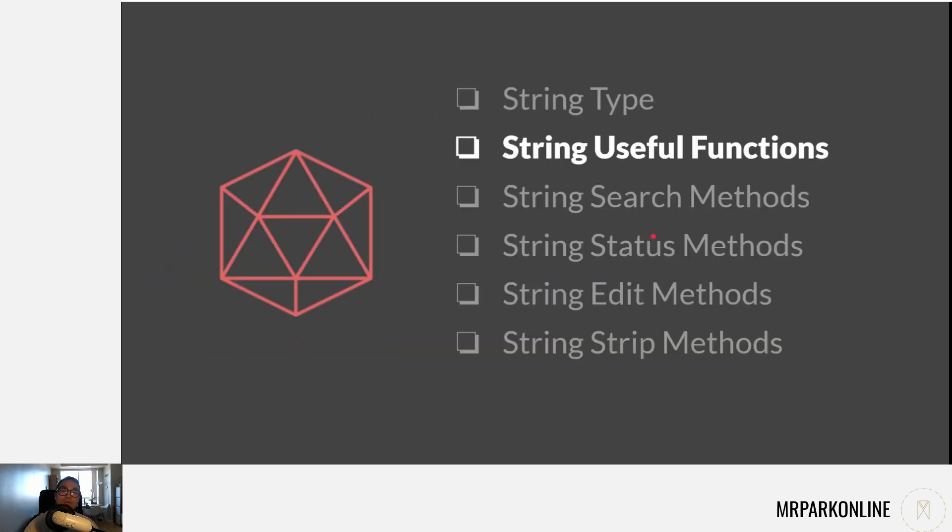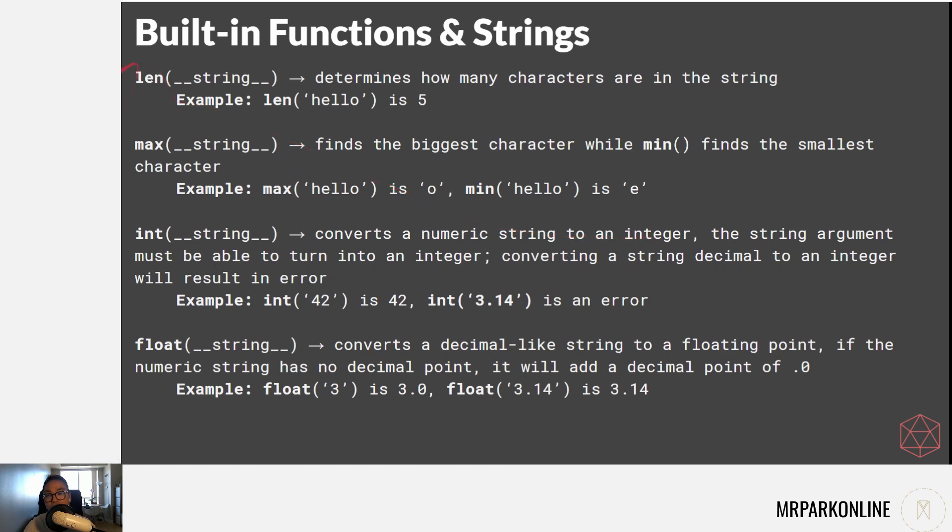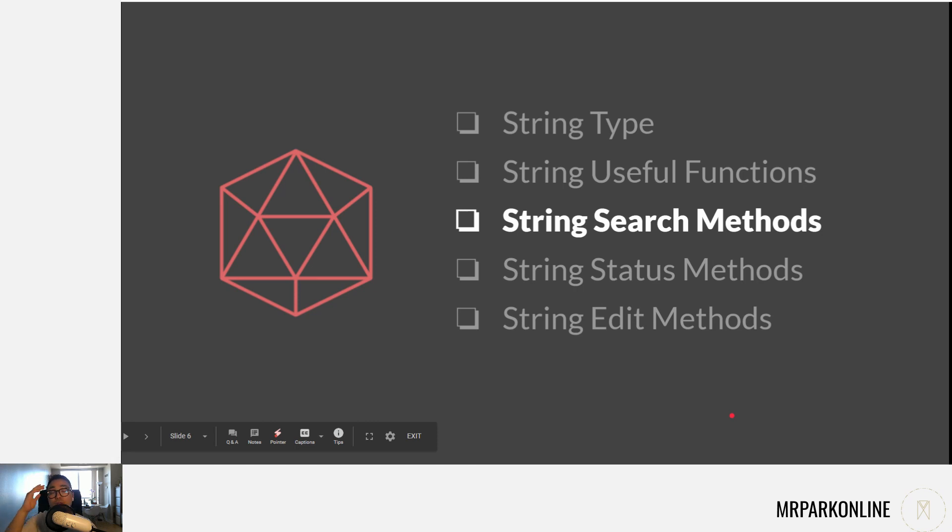Let's learn some useful functions related to strings. If I use a length function on a string, it tells us how many characters are in it. So length of 'hello' is five. Max finds the biggest character while min finds the smallest character. In 'hello', max is 'o' and min is 'e'. We can convert a string to an integer, however our string argument has to be a numeric value. If it has a decimal, it will give us an error. With float, if it's just an integer it'll be 3.0, if it's 3.14 it'll be 3.14 with no problem. I went over those quickly because we've used them before and they should be review.